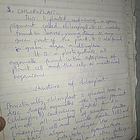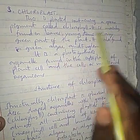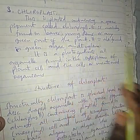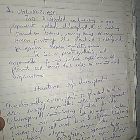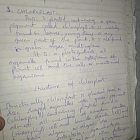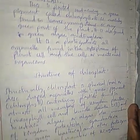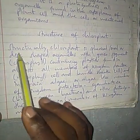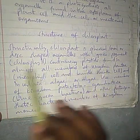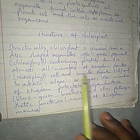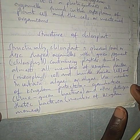Now let's go to Chloroplasts. If a plastid contains a green pigment called chlorophyll, it is a Chloroplast. Chloroplasts are mainly found in the leaves, young stems, or any green part of the plant, and also in green algae and eubacteria. Structurally, Chloroplasts are spherical or oval disk-shaped organelles with green pigment (chlorophyll), found in almost all members of the kingdom Plantae.